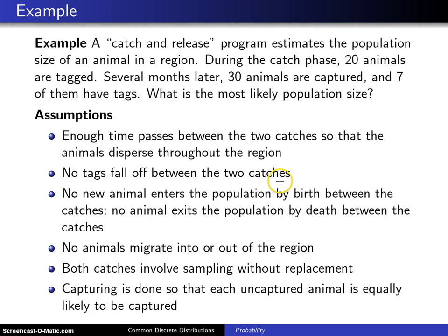Second assumption, no tags fall off between the two catches. Third assumption, no new animal enters the population by birth between the catches and no animal exits the population by death between the catches.